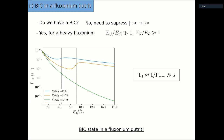Here we show the transition rate from plus to minus in inverse seconds. We see that when you increase EJ over EC, there is an exponential decrease of this transition rate, which means the decay time increases exponentially. This decrease continues up to a point where there is an avoided level crossing between the plus state and the third excited state. To avoid this avoided level crossing, we set a large EJ over EL — the regime of the fluxonium — and with this we can achieve very small transition rates.